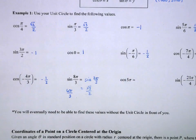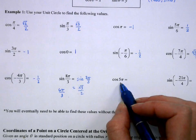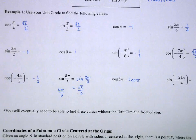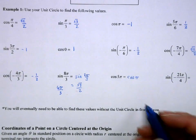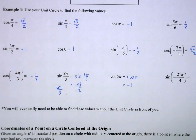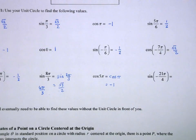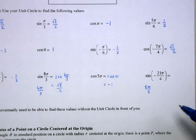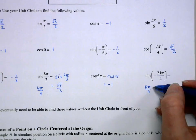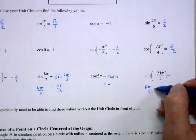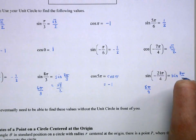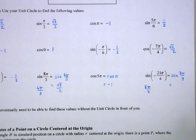Cosine of 5π: subtract 2π twice to get cosine of π, whose x-value is −1. For sine of −21π/4: since 8π/4 = 2π, adding three full rotations (24π/4) to −21π/4 gives 3π/4. That's in the second quadrant, so the y-value is +√2/2.